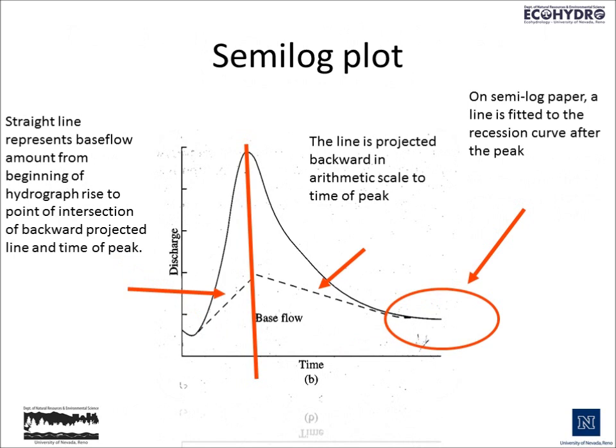We can do the same thing with a semi-log plot, where the discharge rates on the Y axis are compressed by using a log scale. In this approach, we essentially carry a straight line across from the last element of the hydrograph rise to a point of intersection, and then project backward on an arithmetic scale to the time to peak. We're fitting lines to the recession curve after the peak, and then using the same concept of subtracting the base flow amount from the storm flow amount — only this time it's based on a graphical semi-log plot.